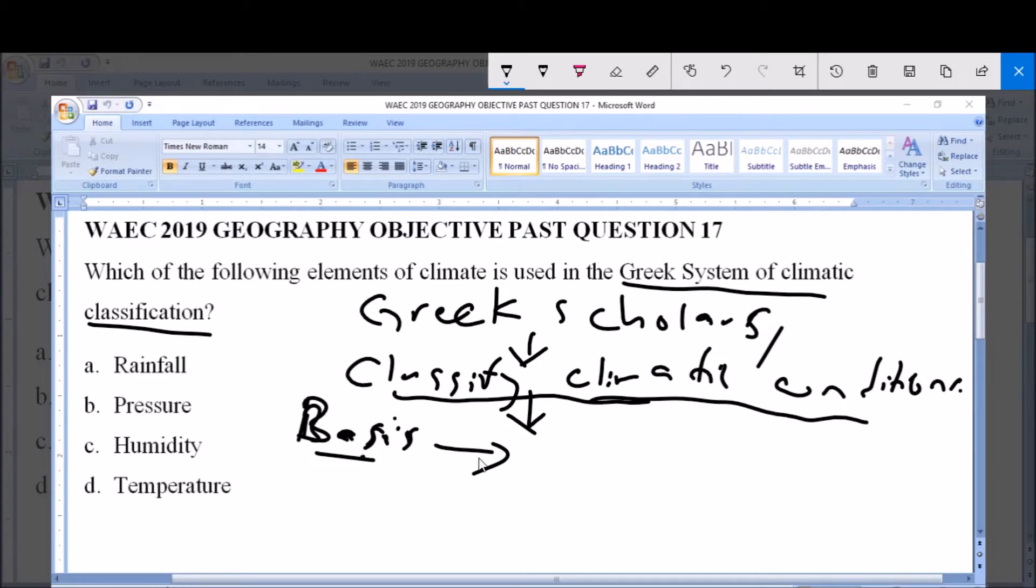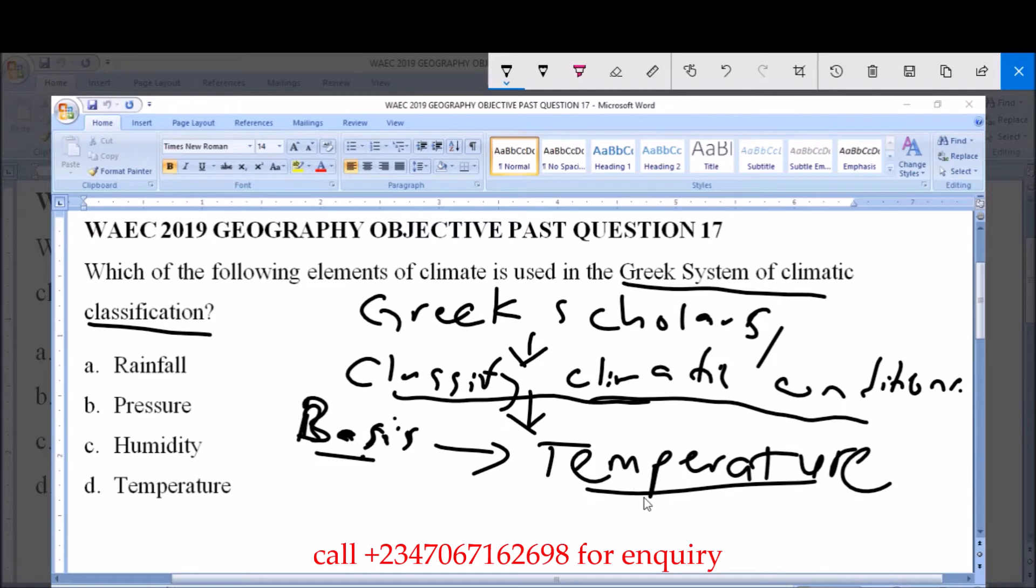The system they developed was that they made use of temperature. So, temperature was the element of climate that the Greeks used to classify climatic conditions.